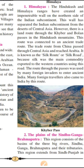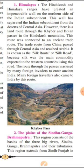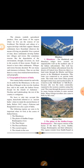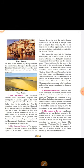Next are the plains of the Sindhu, Ganga, and Brahmaputra. This region consists of the basins of these three big rivers and their tributaries. The later states and empires of ancient India emerged in this region.